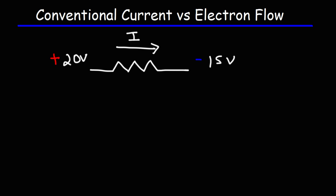When dealing with metal wires and resistors, electrons are the particles that are actually moving inside a wire. So in reality, the electrons are not going to move from positive to negative. They actually move from a region of low electric potential to a region of high electric potential. So these two currents are opposite in direction.